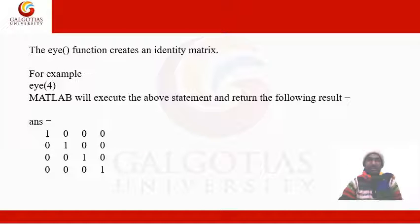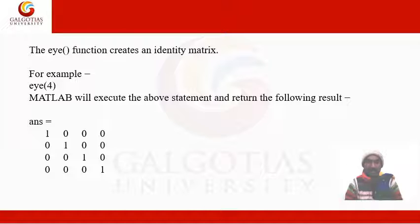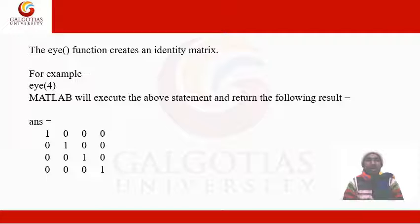The eye() function creates an identity matrix. As previously explained, an identity matrix has diagonal elements equal to one. For example, eye(4) produces a 4×4 matrix with diagonal elements as one. MATLAB executes this using the command eye(4).